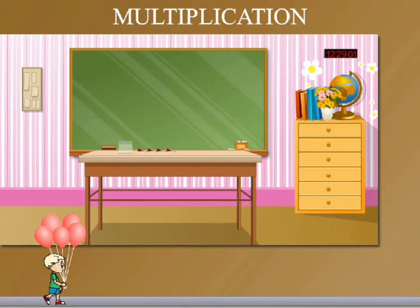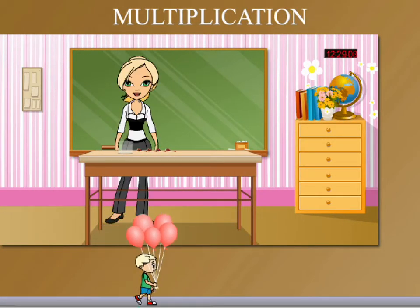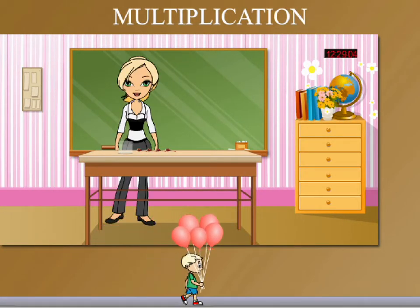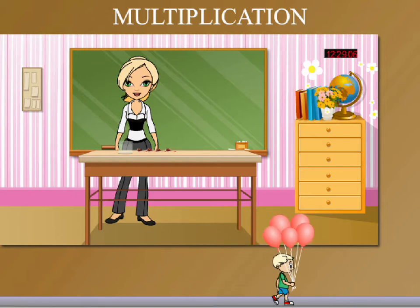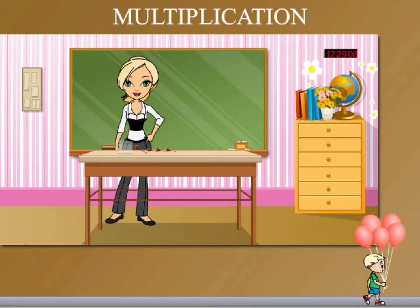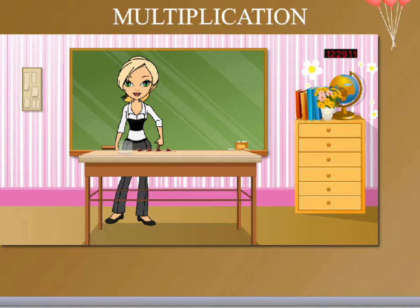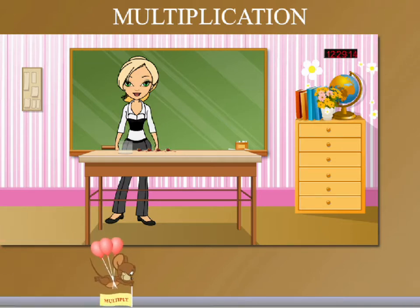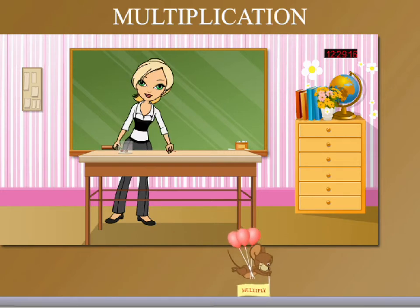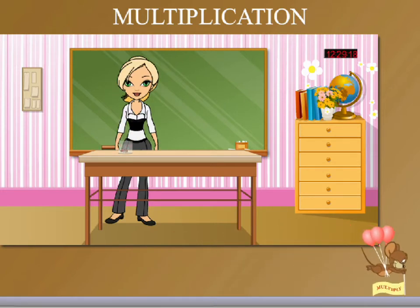Teacher Rosie walks into class with lollipops and a container on her table. She counts the lollipops: 1, 2, 3, and 4. She then picks them up one by one and puts them into the container, grouping them once.